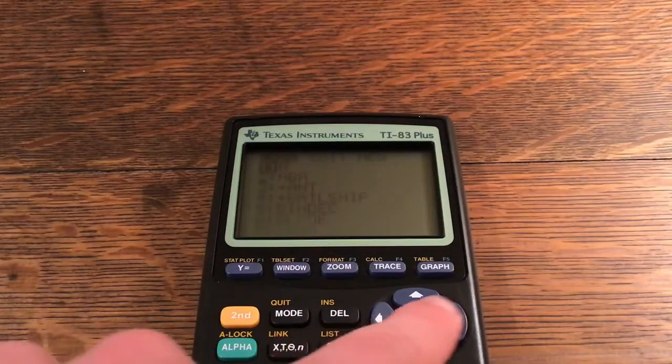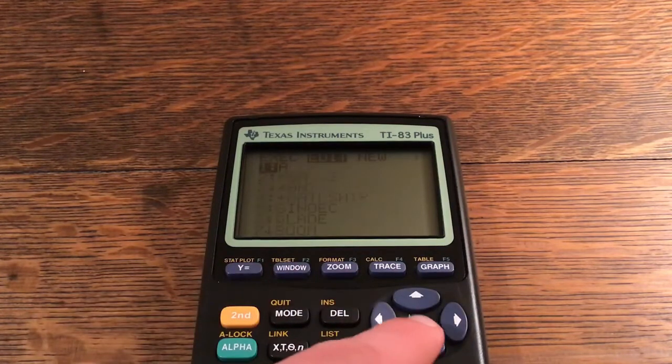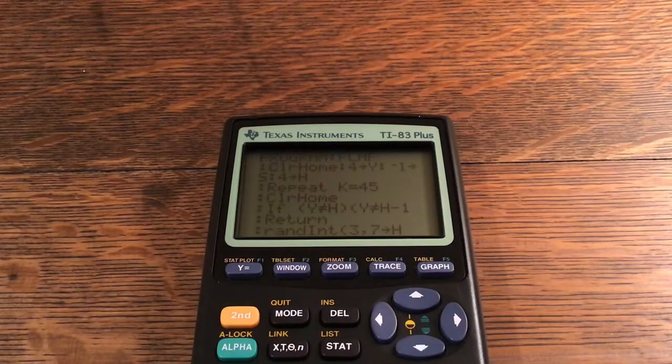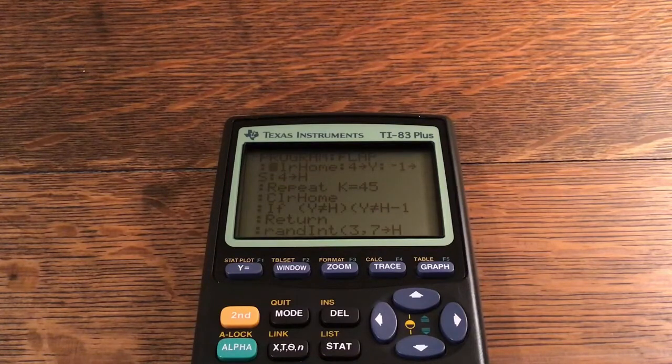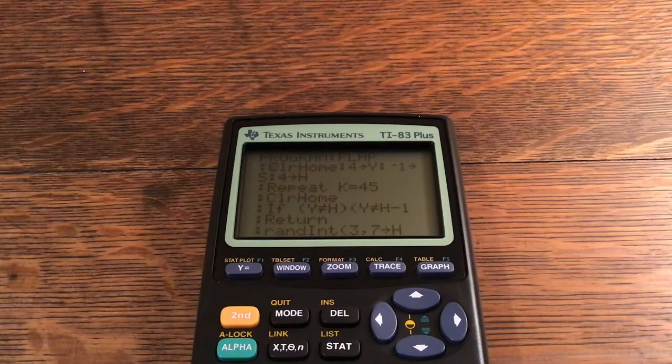Okay, now let me show you how you can make program Flap on your own calculator. We're going to start off with ClrHome to get anything off the home screen. ClrHome is very commonly used as the first line in the program to get rid of anything that may interfere with the gameplay. 4→Y, -1→S, and 4→H. Those are all variables we'll be using later.